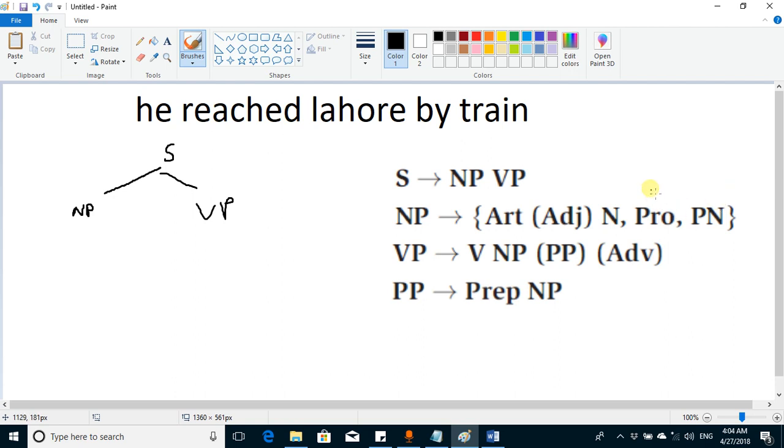The noun phrase has this production rule. Noun phrase may be either a proper noun, or it may be a pronoun, or it may be an article followed by a common noun. This adjective is optional, so anything that is inside the parenthesis is optional.